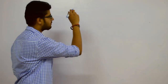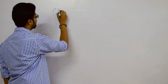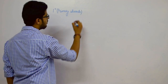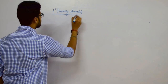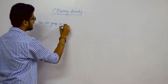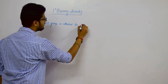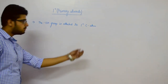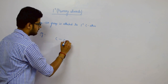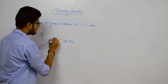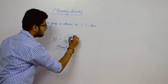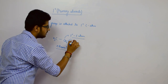In primary or one-degree alcohols, the OH group is attached to a primary carbon atom. For example, in ethanol — CH3-CH2-OH — the OH group is attached to the primary carbon atom, making it a primary alcohol.